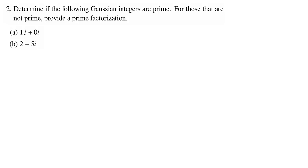In this video, we continue our discussion of the Gaussian integers. We want to show that certain Gaussian integers are prime or are not prime. We want to give a prime factorization. Of course, we'll have to prove that when we do a factorization, what we get are actually primes.